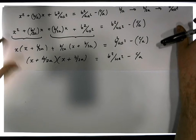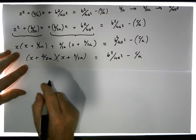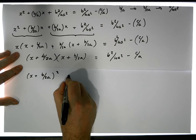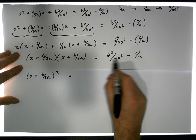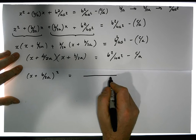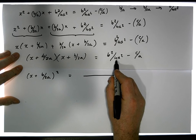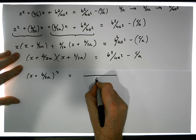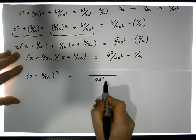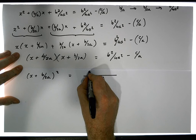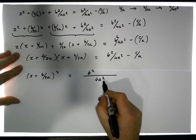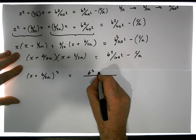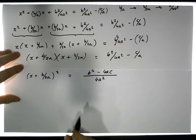Now, this expression here is the same as (x + b/2a) squared, which must equal this term over here. There's a common denominator to find — it would be 4a squared. So 4a squared into 4a squared goes once, giving us b squared, and a into 4a squared goes 4a times, giving us minus 4ac.